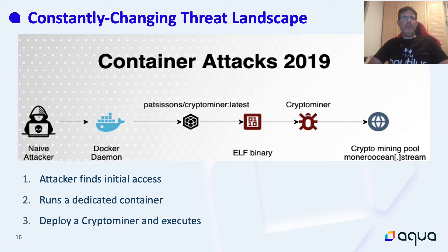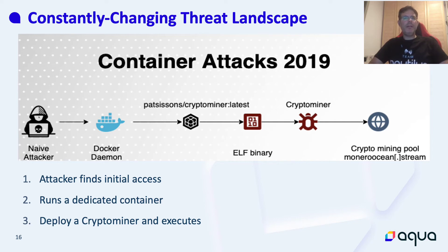In 2018 and 2019, attacks against containers were pretty simple. The attacker would find an initial access — usually a misconfigured Docker API or Docker daemon — run a dedicated container, specifically packing an ELF binary which is a crypto miner, deploy it, and execute it. That's the attack — very simple and very straightforward. Since then, we've seen a lot of change in the threat landscape, and I'm going to describe some of these techniques right now.